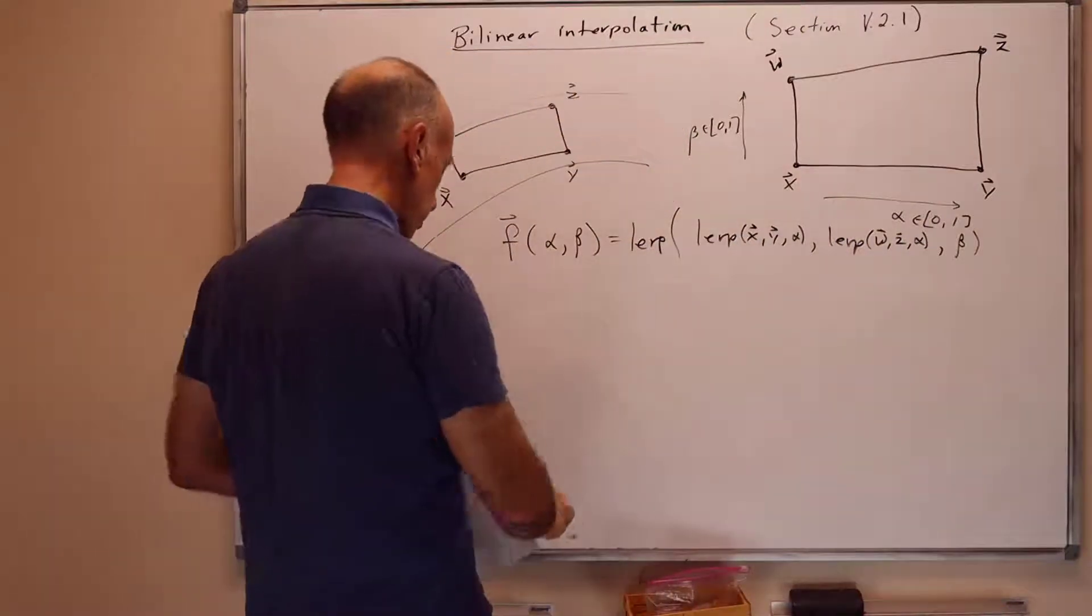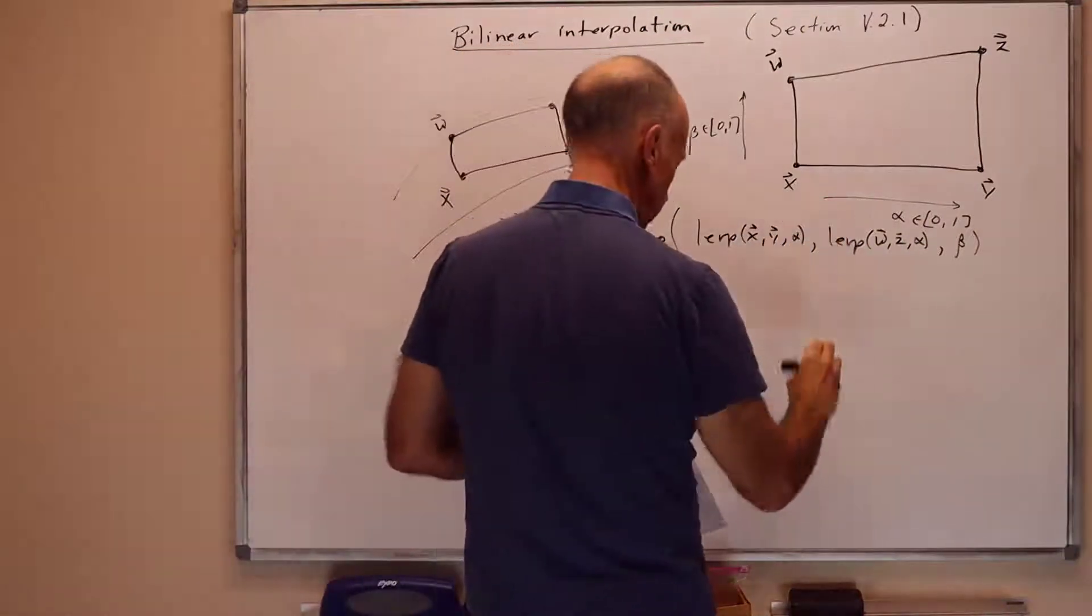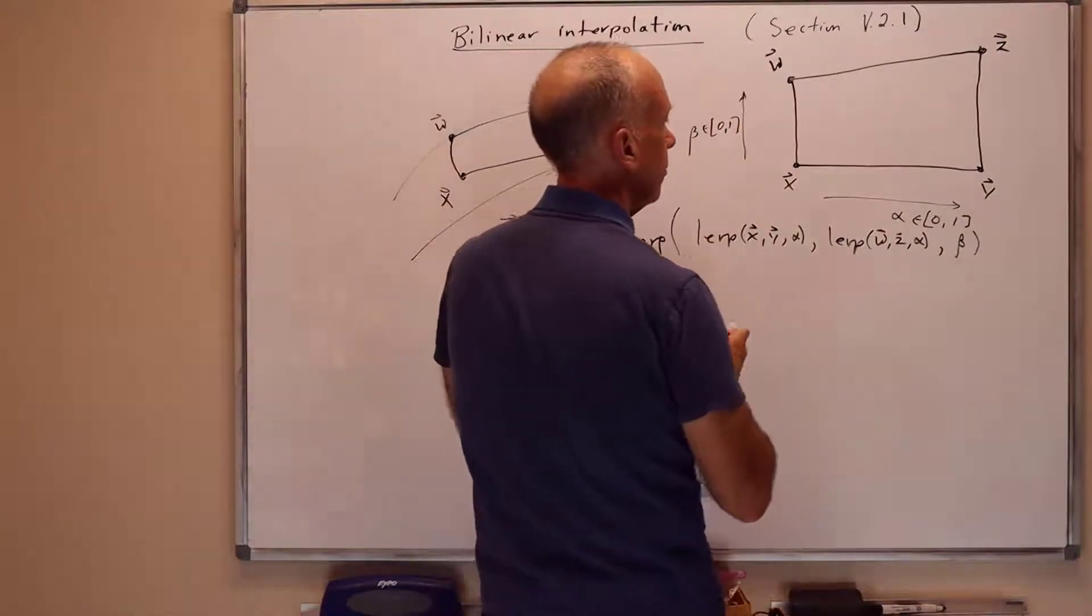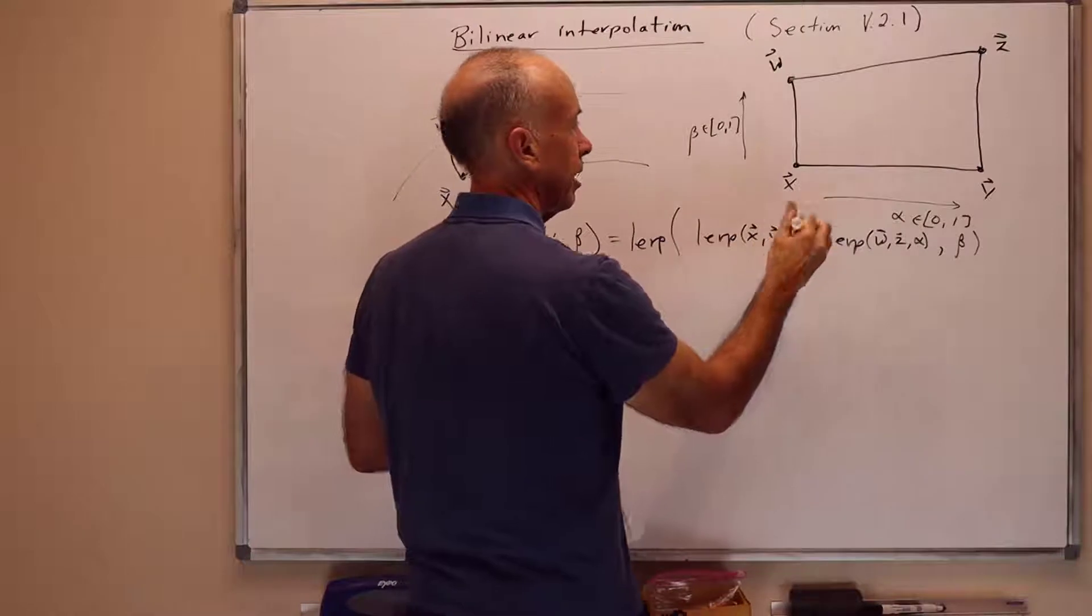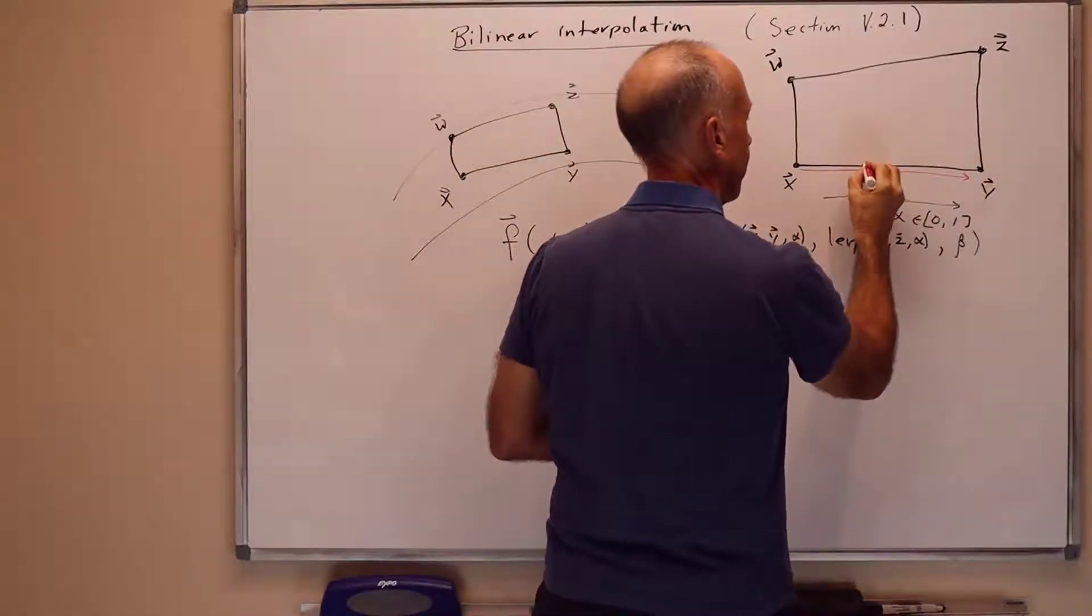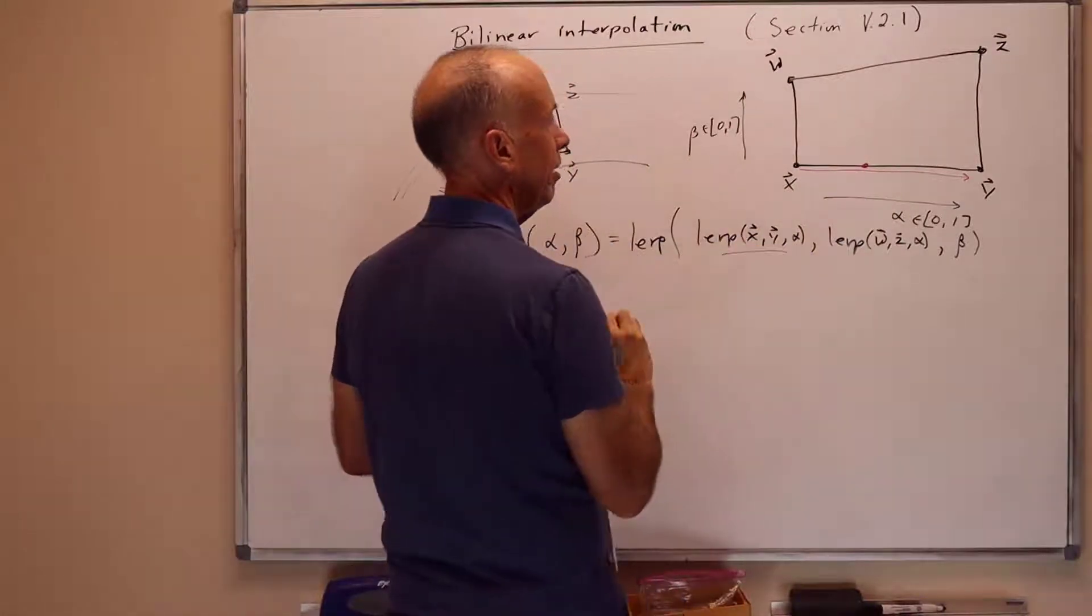We're LERPing across this way. So we're LERPing from x to y by fraction alpha. So that's going across this way. And we're going across some fraction alpha. So that gives us this point here.